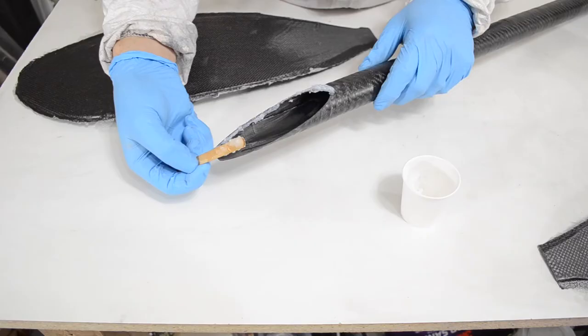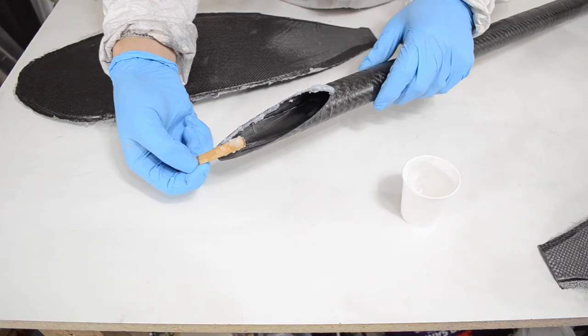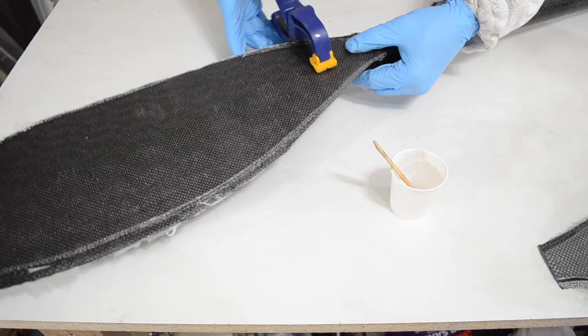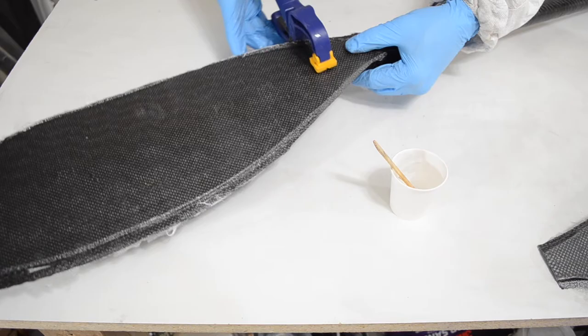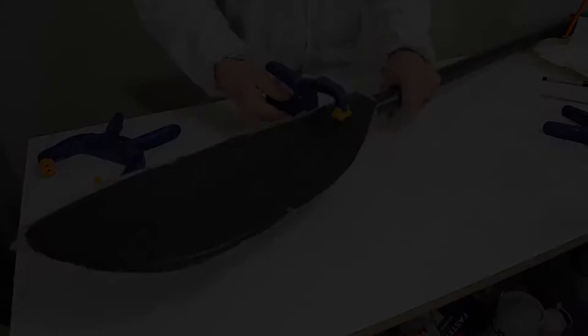I mixed until it had about the consistency of Vaseline. I gooped on a generous amount, lined everything up, made sure it looked good and clamped it down. With the epoxy still wet, I used my popsicle stick to make a nice fillet of epoxy all the way around that joint. And I left it to cure.